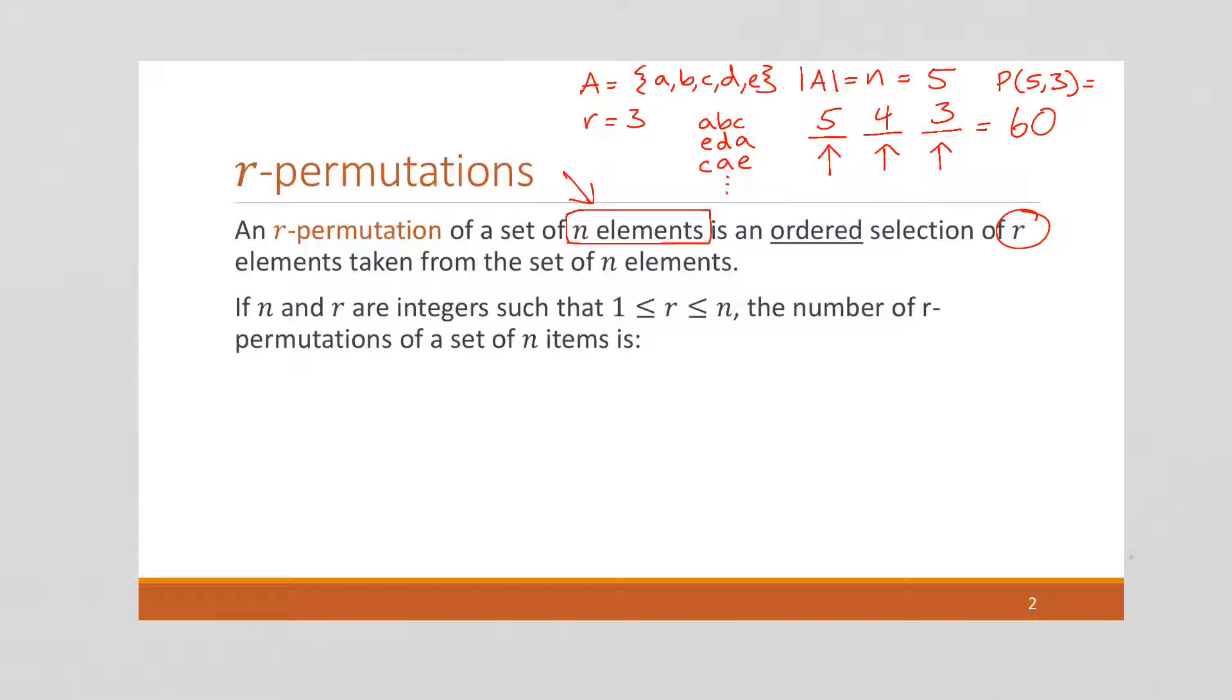So formally, if we want to look at this, we're going to say the permutation of n elements where we choose r of them.